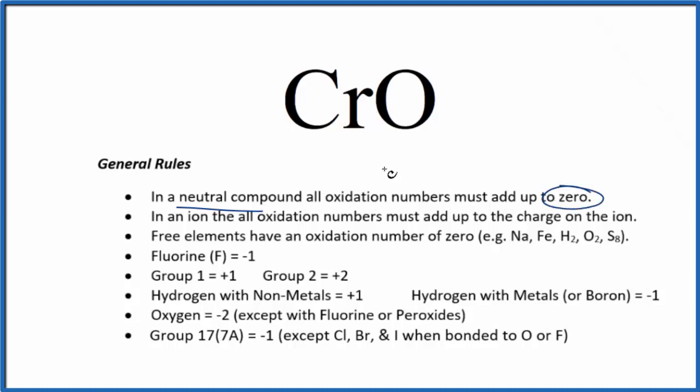We won't find chromium here on our list of rules. It's a transition metal, so it often has different oxidation states depending on what it's bonded to. But we can look at the oxygen, which will have a negative 2 oxidation number, with just a few exceptions here.